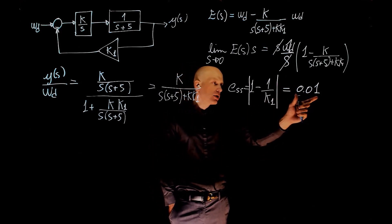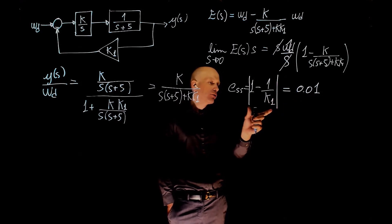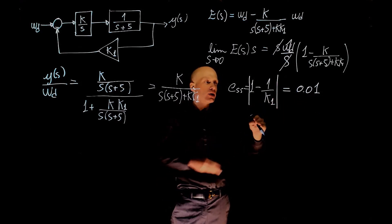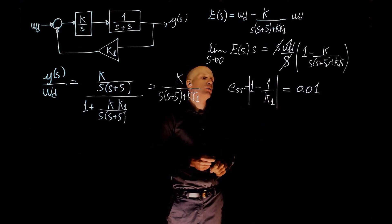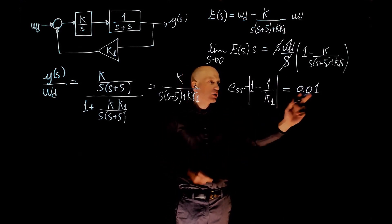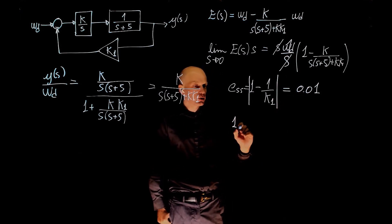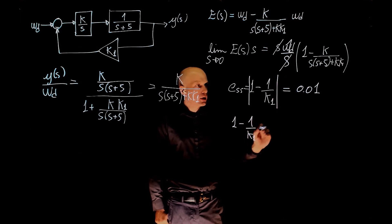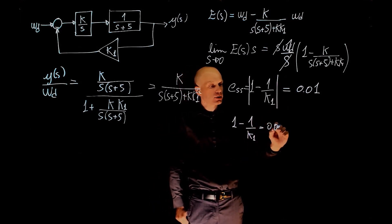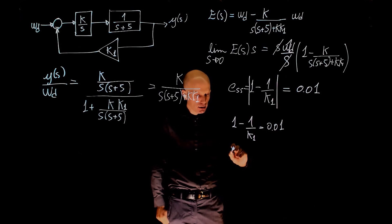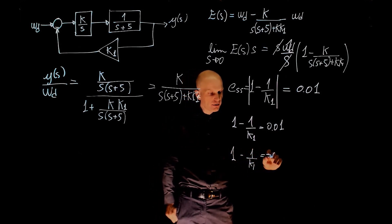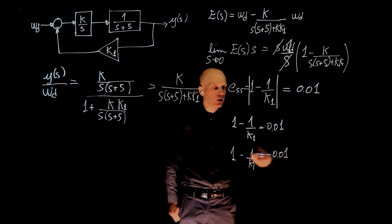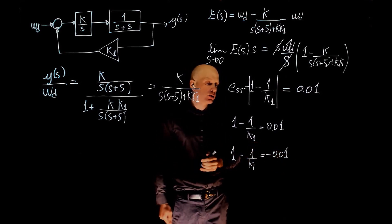So we have positive 0.01, or if this is also negative 0.01, the range between the two is the range that we want the steady-state error to be within. So let's just start with the positive value. We need to solve for k in this condition. 1 minus 1 over k1 equals to 0.01. And 1 minus 1 over k1 equals to negative 0.01. Because again, we are interested in the magnitude.